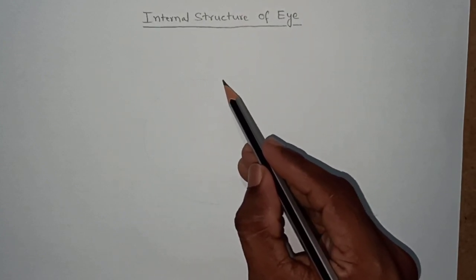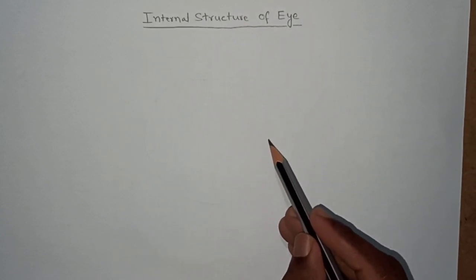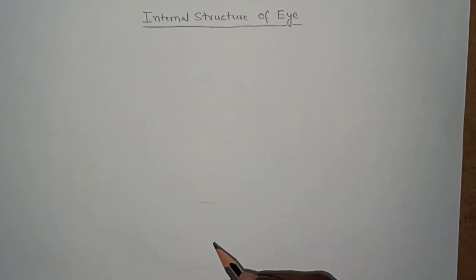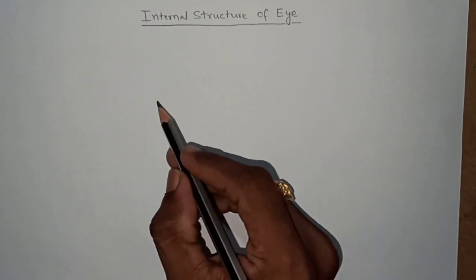At first, because the eye is a spherical organ, a rough circle we have to draw like this. And we know the eye has three layers.